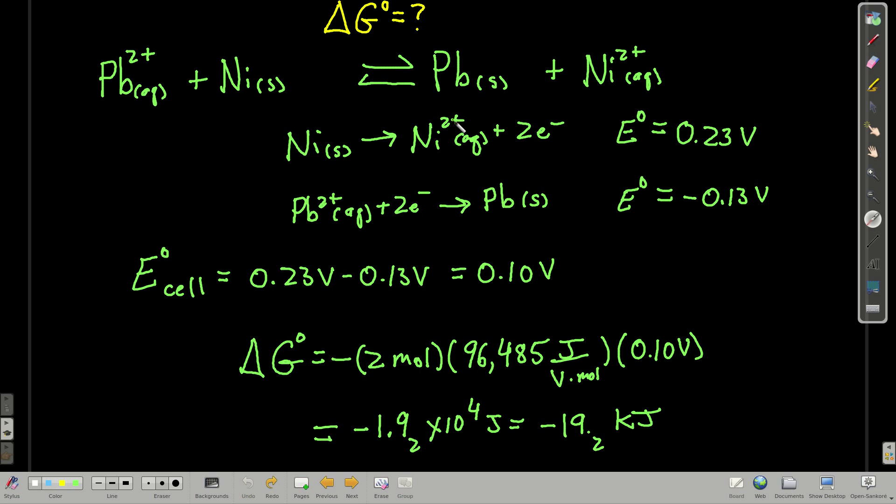Now let's do a couple of examples. What's delta G zero for this process here? This is a redox reaction where nickel is being oxidized and lead is being reduced. Here's the process. We write down each of the half reactions. The oxidation half reaction is nickel. And we look up the standard reduction potential for that process. We look up the standard reduction potential for nickel 2 plus, and that's negative 0.23 volts.